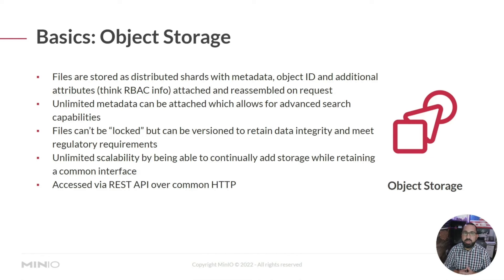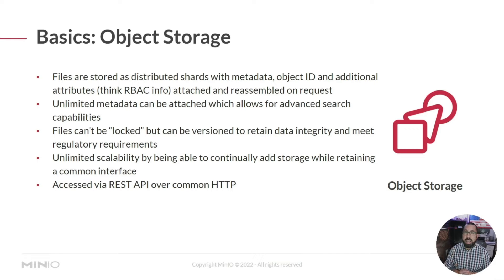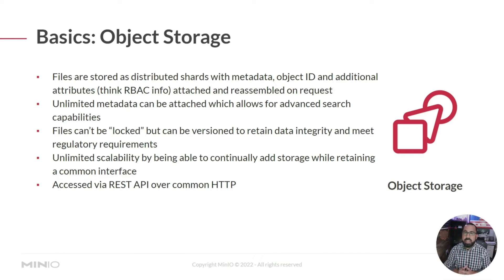So let's talk about some of the basics of object storage. In object storage, files are stored on distributed shards with metadata, object ID, and additional attributes — things like RBAC, so who's allowed to do what to those files, whether they're allowed to read, open, or download them — and reassembled upon request. Unlimited metadata can be attached, which allows for even more advanced search capabilities. Note that in MinIO, unlimited metadata can be attached, whereas a lot of other S3 or object storage providers do limit the amount of metadata you can attach to a file. Files cannot be locked, but versioning can be turned on to retain data integrity and meet regulatory requirements, where you can't have that file change without there being a record of that change and being able to roll back to that previous state. There's also this concept of unlimited scalability in object storage, where you just keep adding backends regardless of where they are, and the front-end interface takes care of all of that and obfuscates it away from the end user.